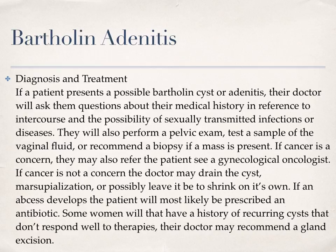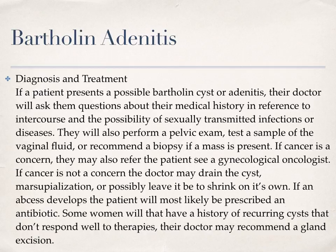Diagnosis and Treatment: If a patient presents a possible Bartholin cyst or adenitis, their doctor will ask them questions about their medical history in reference to intercourse and the possibility of sexually transmitted infections or diseases. They will also perform a pelvic exam, test a sample of the vaginal fluid, or recommend a biopsy if a mass is present. If cancer is a concern, they may also refer the patient to a gynecological oncologist. If not, the doctor may drain the cyst, use marsupialization, or simply leave it to shrink on its own. If an abscess develops, the patient will most likely be prescribed an antibiotic. Some women with a history of recurring cysts who don't respond well to therapies may have their doctor recommend a gland excision.